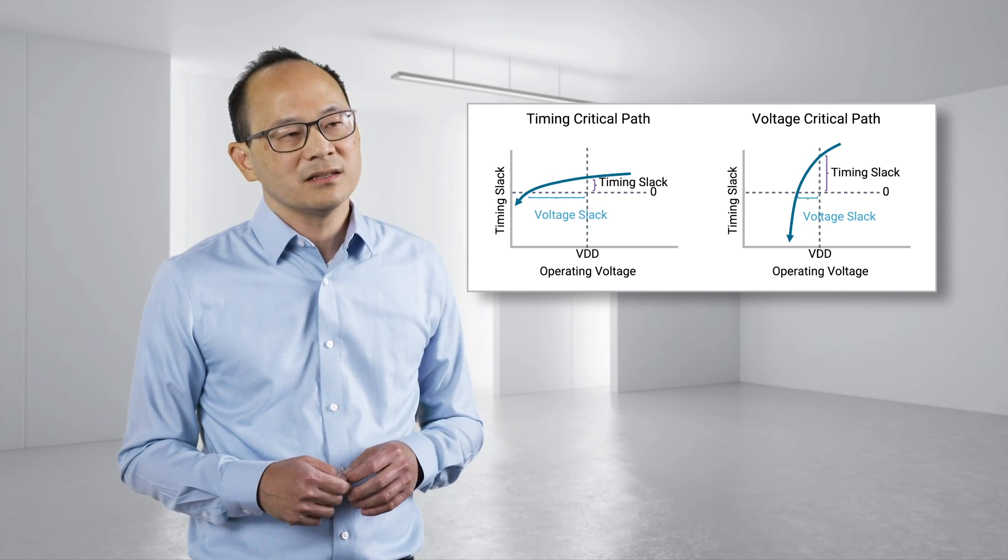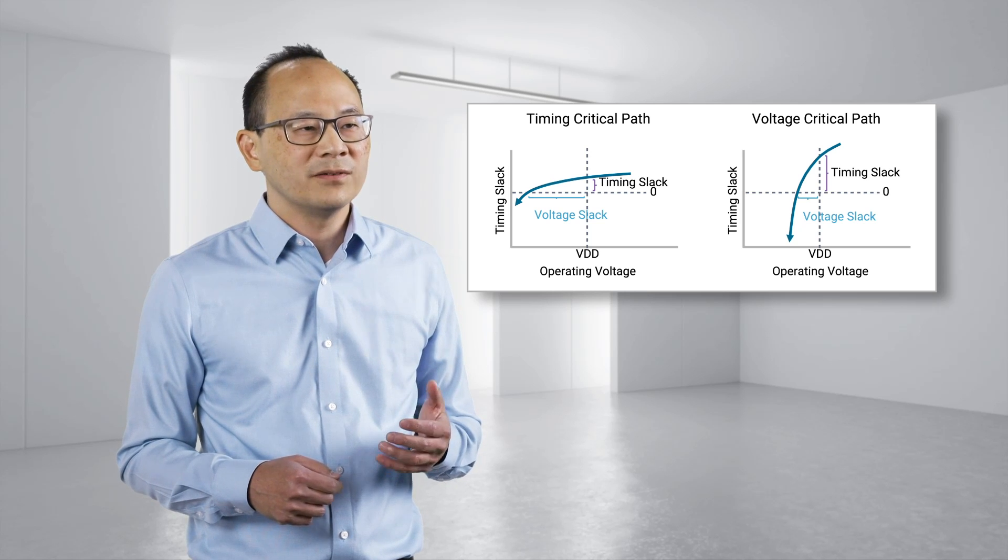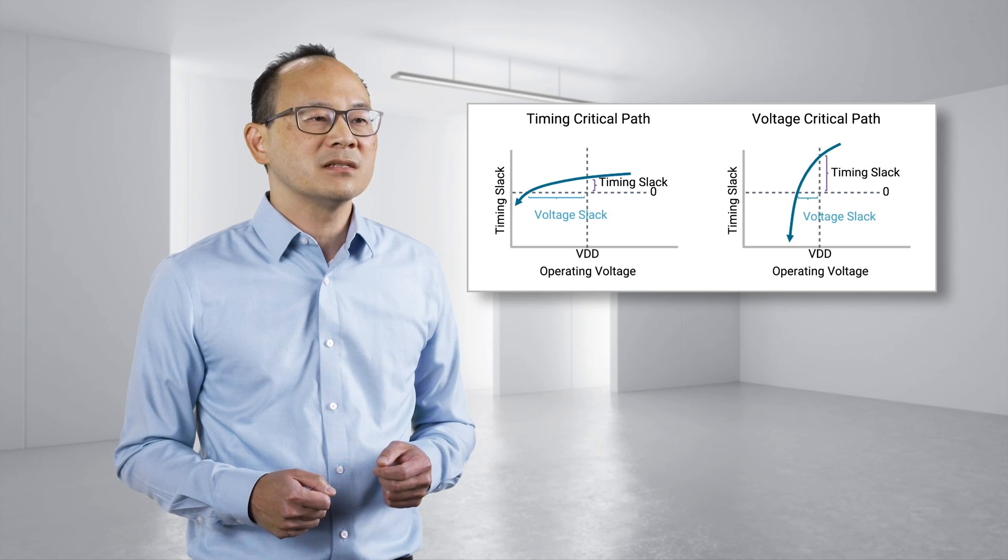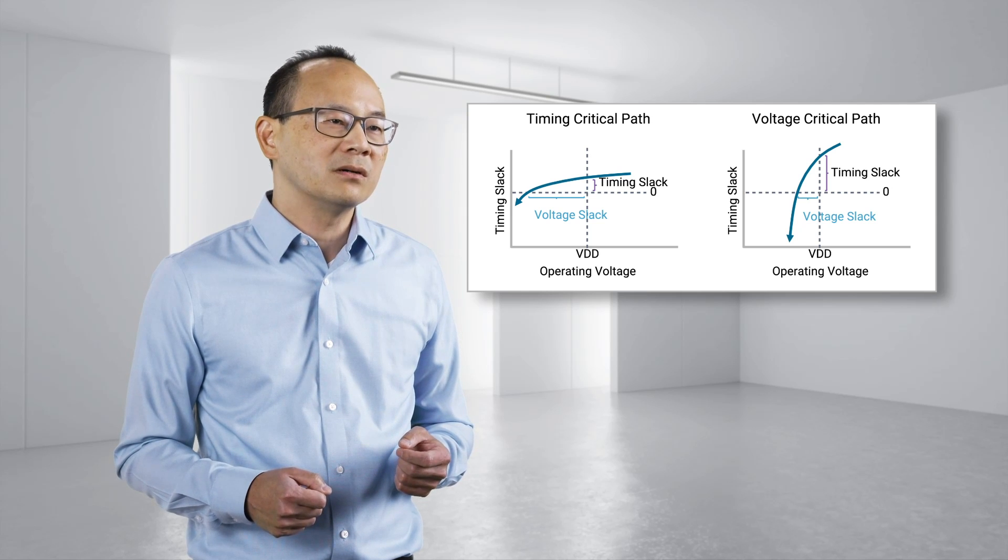Prime Shield's voltage slack analysis provides a direct and efficient path to analyze and report such information for efficient sign-off closure with primetime ECO and tweaker.